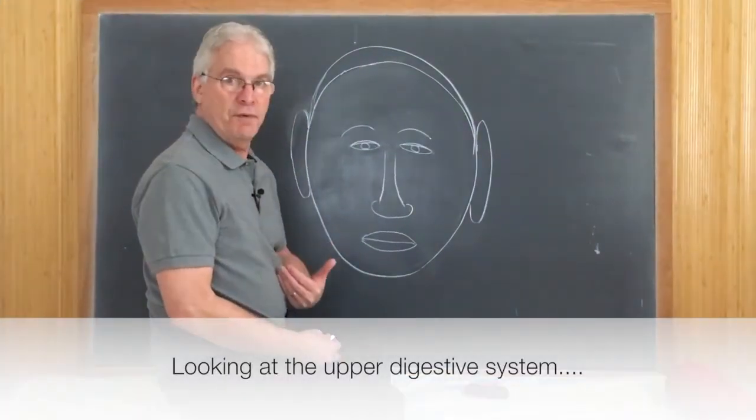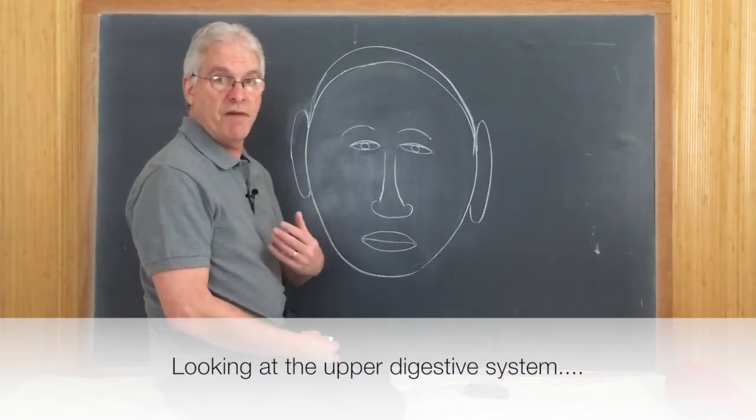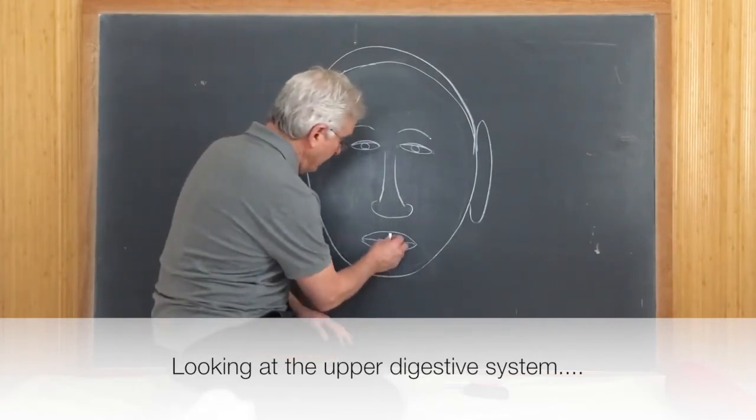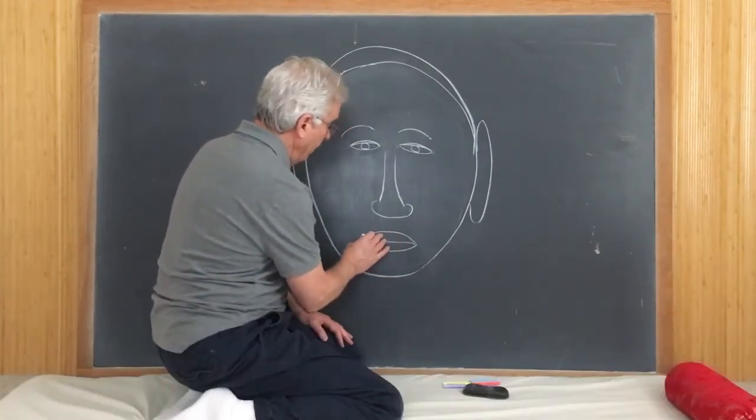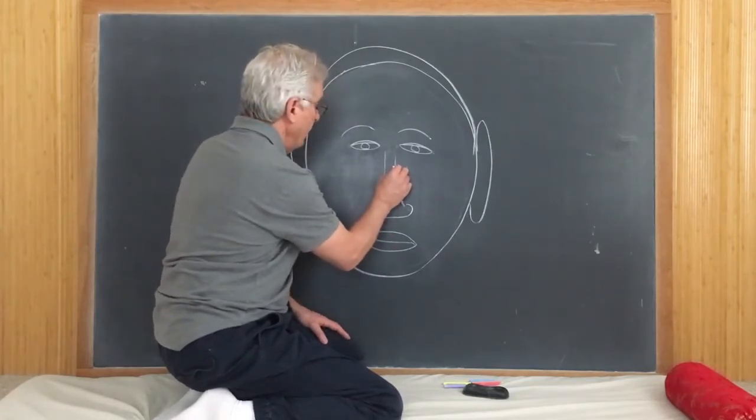The first place that food enters, besides the mouth, comes down through the esophagus and then enters into the stomach. And we can see the stomach in, actually we can see it in two places. One is right here on the nose.